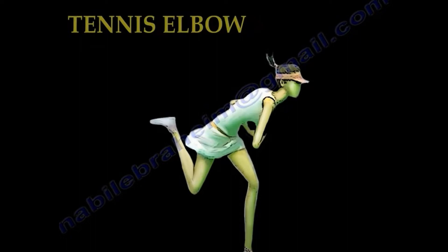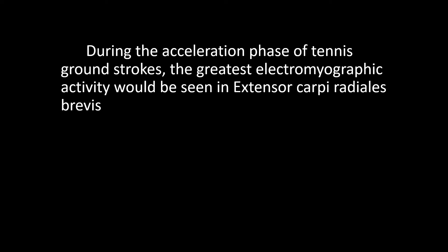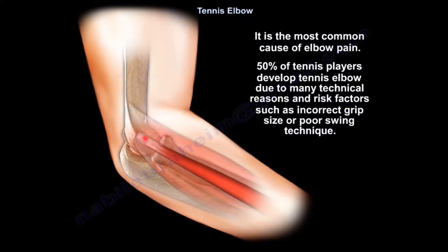Tennis elbow is somehow connected to playing tennis. During the acceleration phase of tennis ground strokes, the greatest EMG activity is seen in the extensor carpi radialis brevis muscle. The most common cause of elbow pain is tennis elbow, and 50% of tennis players develop it due to technical reasons and risk factors such as incorrect grip size or poor swing technique.